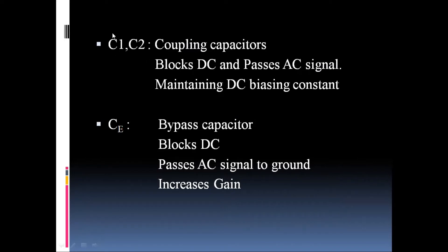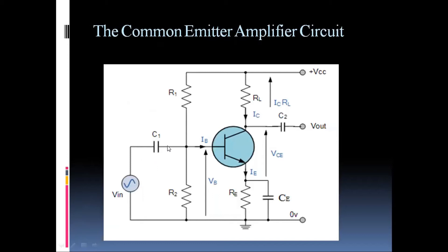Different capacitors are used in the common emitter circuit. C1 is used at the input side and C2 is used at the output side. The purpose of these capacitors is that capacitors block DC and allow the AC signal to pass. Since this is an amplifier, we are going to amplify the AC signal, so the AC signal should pass through the terminals fully. The input and output coupling capacitors pass the AC signal easily but block DC.